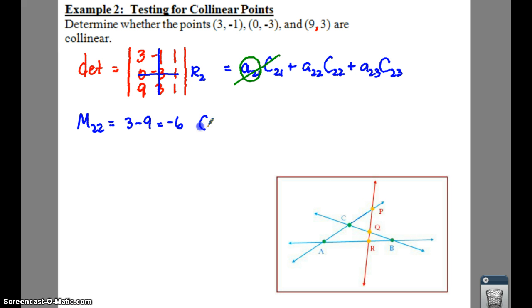Which means your cofactor, well, since two plus two is an even number, that means you're going to multiply by a positive one, which means your cofactor is a negative six.